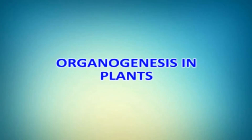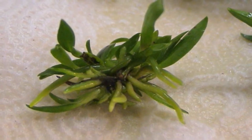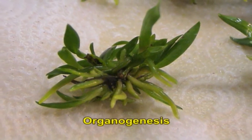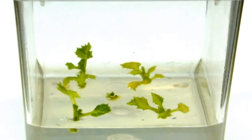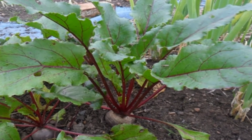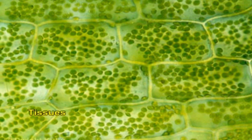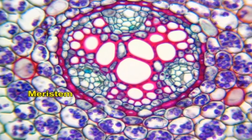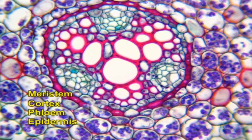Now let us concentrate on organogenesis in plants. Many of us would have come across the term organogenesis. To some extent the term is self-explanatory, but let us learn in detail what organogenesis in plants is. A plant has many specialized cell organizations, tissues and organs. Tissues such as meristem, cortex, phloem and epidermis consist of cells of identical shape and specific function.